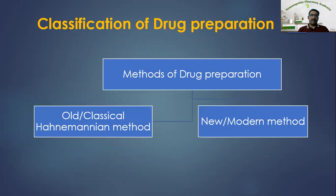The classification of drug preparations in homeopathy includes two methods: the old classical Hahnemannian method and the new or modern method. The old classical Hahnemannian method was introduced by Hahnemann himself, while the new method was introduced by the British Homeopathic Pharmacopoeia and later elaborated by the Homeopathic Pharmacopoeia of the United States.